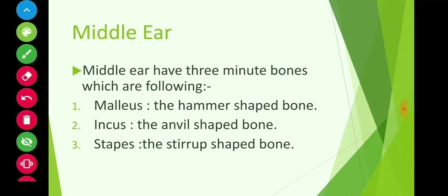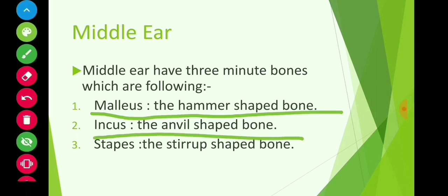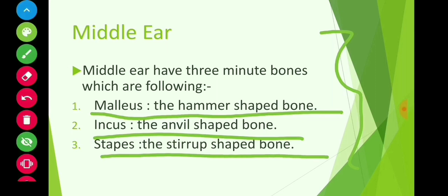The middle ear is basically an air-filled cavity in which three bones are present: first is the malleus, which is a hammer-shaped bone; second is the incus, which is an anvil-shaped irregular bone; and third is the stapes, which is a stirrup-shaped bone.